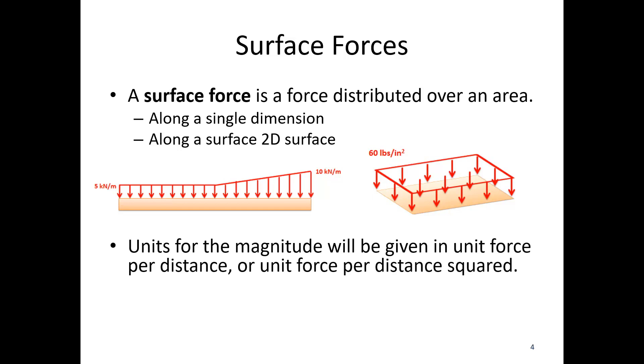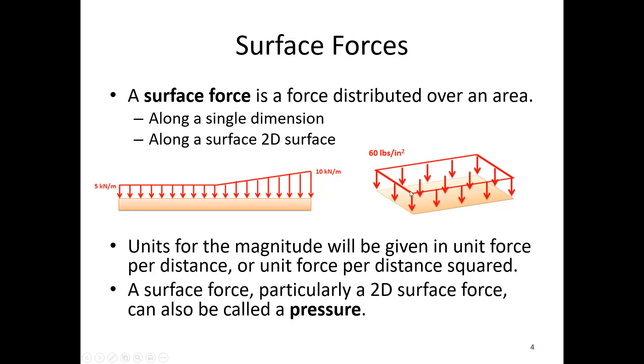The units for the magnitude are given in terms of force per distance or force per distance squared. Five kilonewtons per meter is an example of the units, and then 60 pounds per square inch over here. A surface force, particularly the 2D surface force, can also be thought of as a pressure. The units for pressure and the units for the surface force are the same, and water pressure is an example of something that is both of these things.